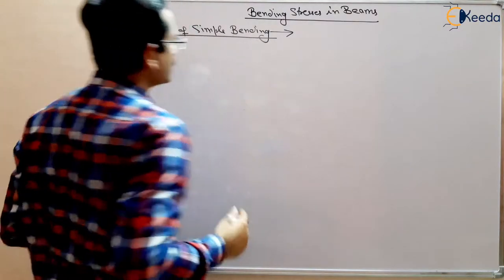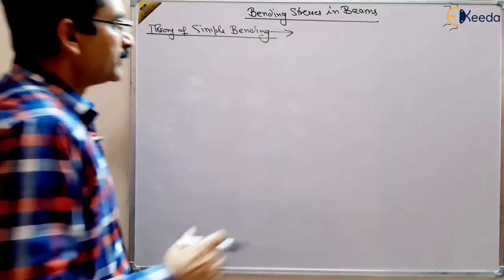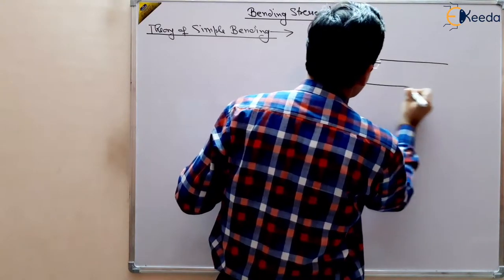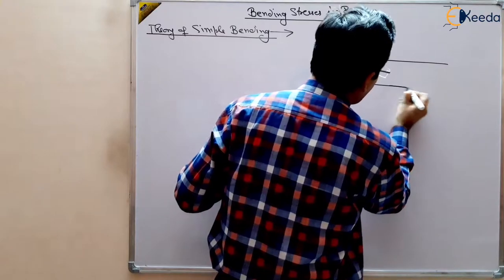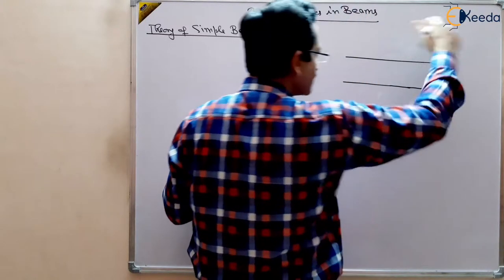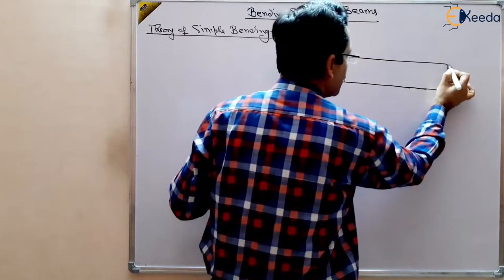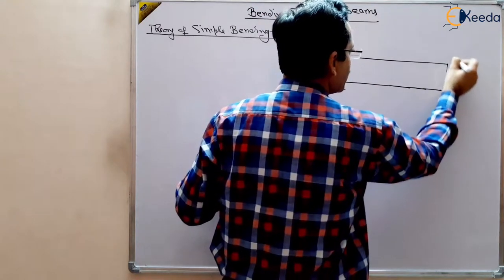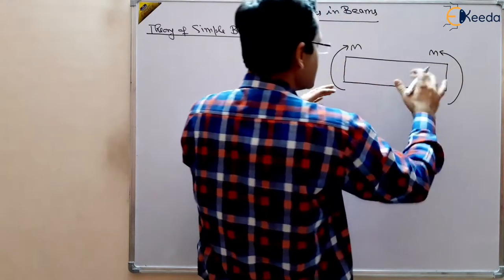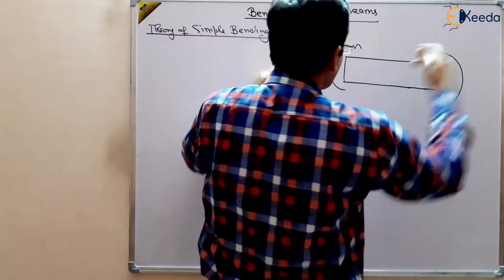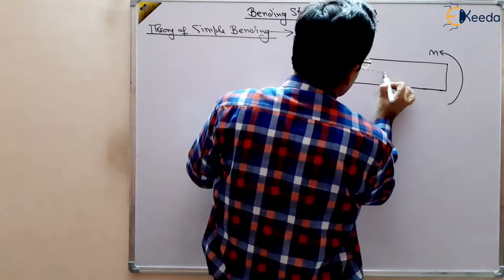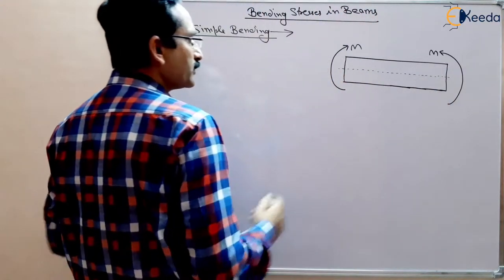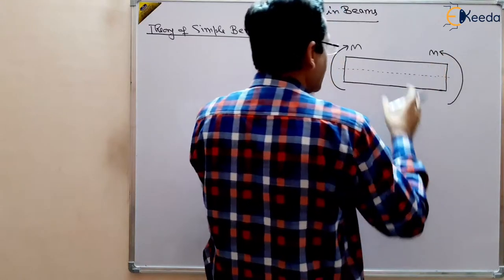What do we mean by theory of simple bending? Suppose we have a beam and we have applied a bending moment to it. Due to certain load, the bending moment is developed in the material. This is a sagging bending moment, in which the upper layer is compressed and the lower layer is in tension. There is bending moment M applied, and this is pure bending.